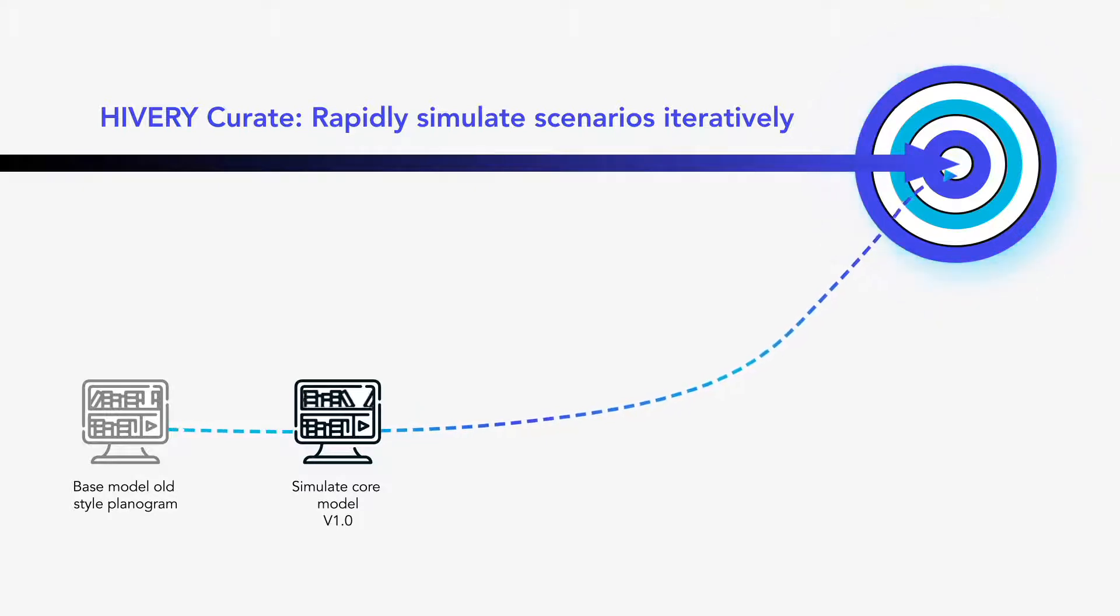You add this goal into Hivory Curate's engine directly. You can specify your goal at a granular level with weighting, say 55% on revenue and 45% on volume, or just 100% on volume.